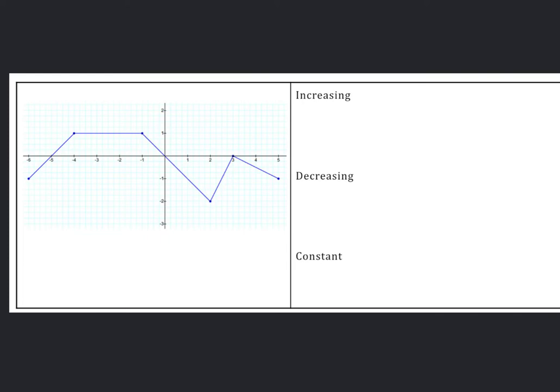Starting out is just graph behavior. Looking at this graph, can we describe the intervals where that graph is increasing, decreasing, and constant? And we're going to use interval notation. So where is this graph increasing? Left to right, it's increasing here and here.